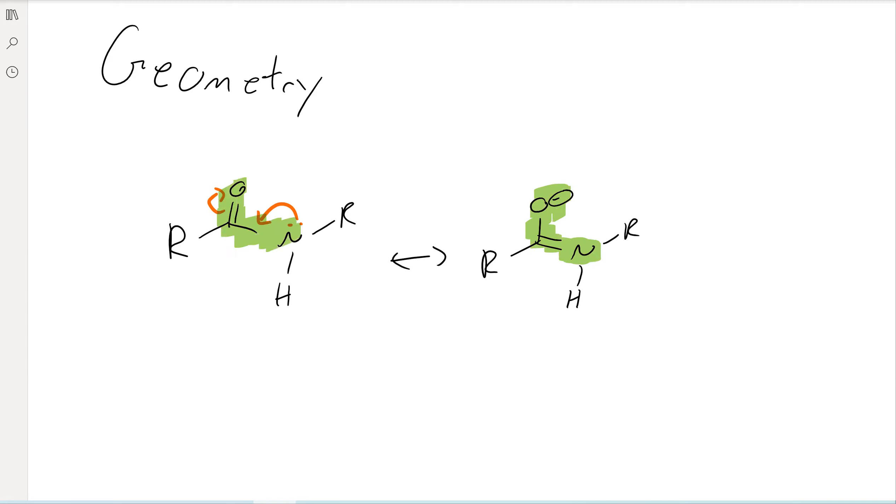Remember, if it can hybridize, we're going to go to the one that's higher in P value. And so this nitrogen, this carbon, and this oxygen are all sp2 hybridized. And so what that means is that they're planar.